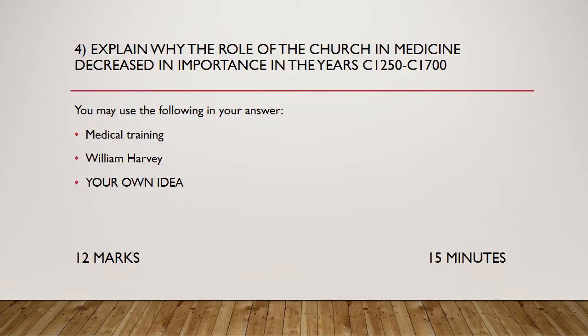Next question — an explain why question. This is: explain why the role of the church decreased in importance in the years 1250–1700. The simplest answer is that the church just lost its influence after the Black Death, 1348–1349. You have a greater sense of empowerment going towards thinkers, hence the Renaissance. The Renaissance comes around because the power of the church has decreased and more people are willing to question things.